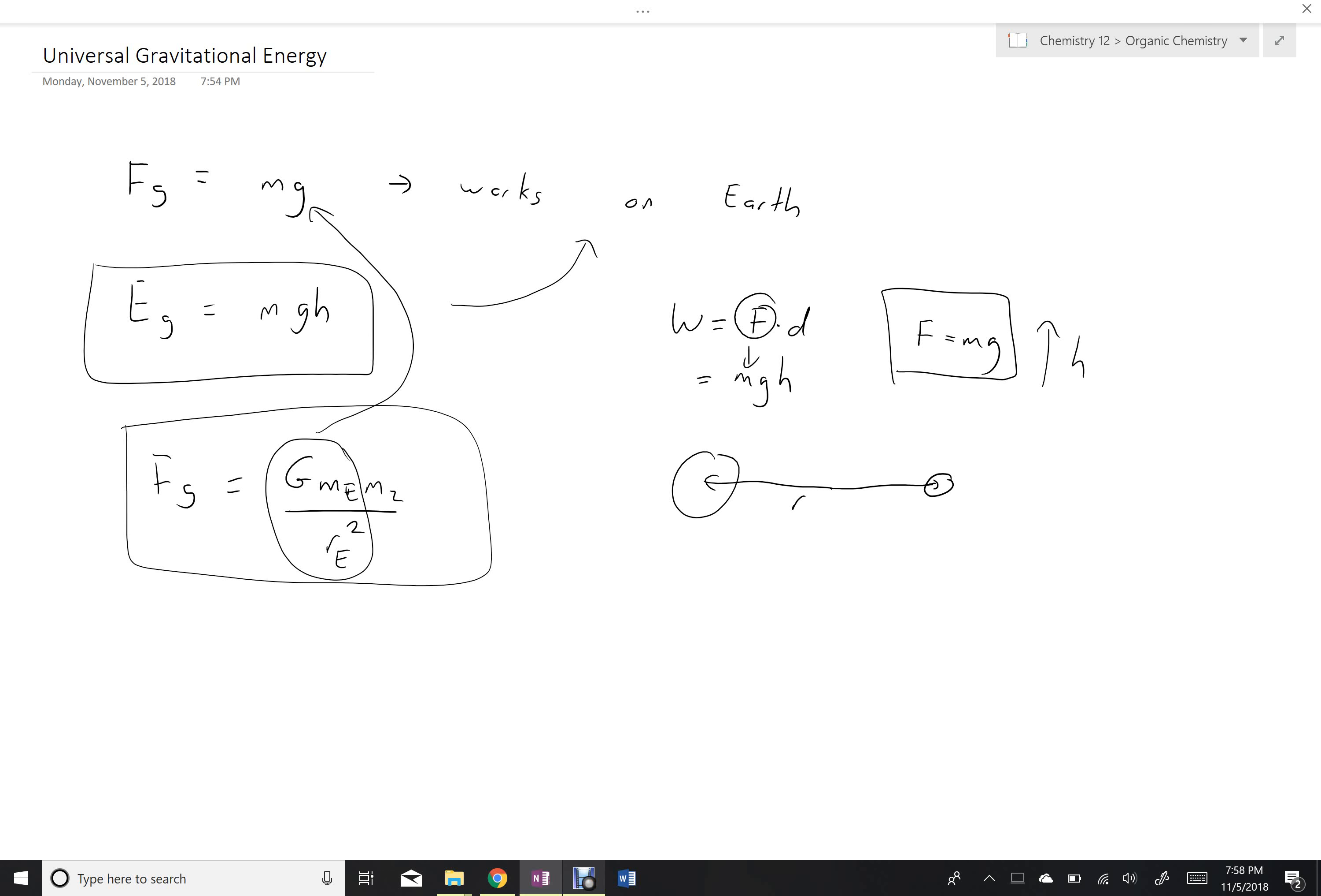Similarly, we can come up with a formula for the universal gravitational energy that will work in any situation. So, for example, we were looking at the energy associated with the Earth orbiting the Sun or something like that, or we're considering the energy of something that was coming from far away and coming to the Earth.